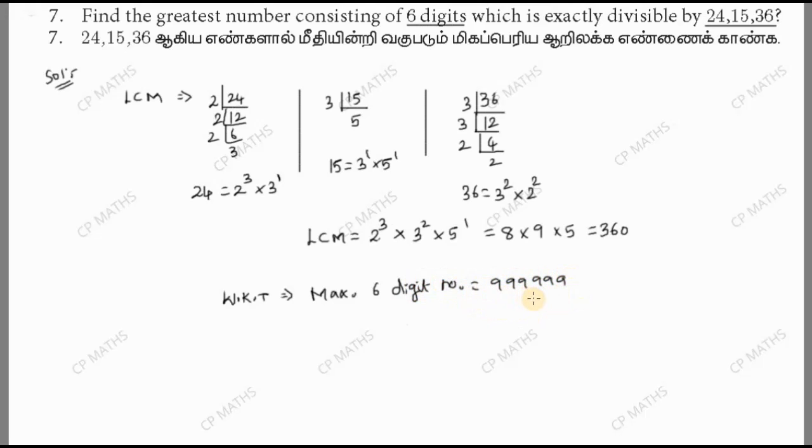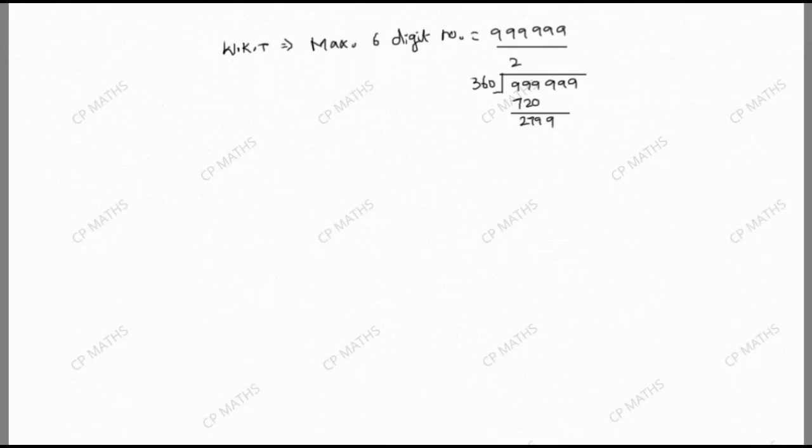We need to divide 360 into 999999. Let me work through this division: 360 into 999, that's 2 times. 360 into 999 gives us 720, with 279 remaining.